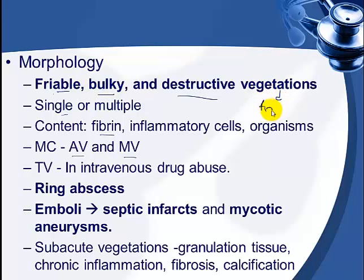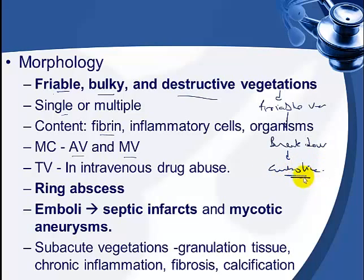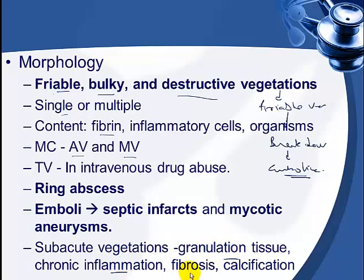These friable vegetations may break down and embolize. If they embolize from the left side of the heart, they enter the systemic circulation. If they are on the right side of the heart, they enter the pulmonary circulation and cause septic infarcts in those areas. Subacute vegetations also show granulation tissue, chronic inflammation, fibrosis, and calcification, reflecting their more chronic nature compared to acute ones.